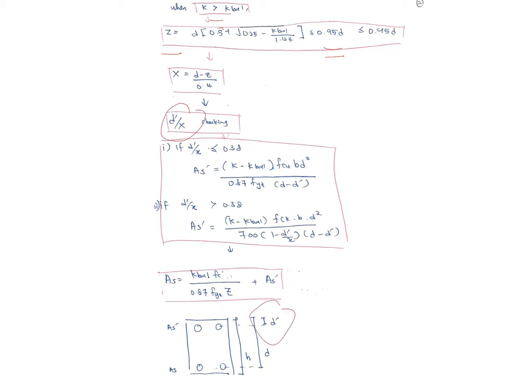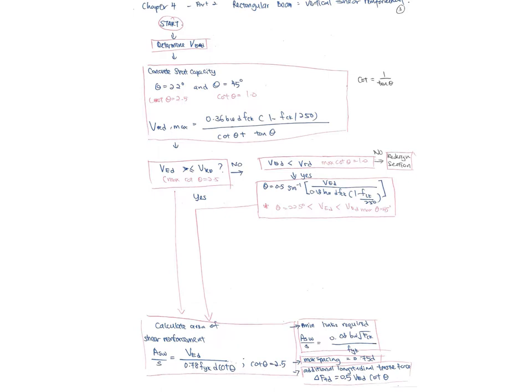Calculate x, then check the ratio d'/x. d' is the distance from the top edge to the center of the compression reinforcement bar. If d'/x ≤ 0.38, use the standard equation for As'. If d'/x > 0.38, use the alternative equation. After calculating x, determine bar diameter and quantity, then calculate As = (k_balance·fck / 0.87·fy)·b·d² / z + As'.